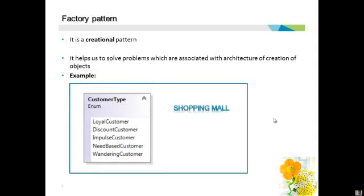When you look at the term factory pattern, it implies that it is going to create or produce something for us. What exactly does the factory pattern create? Objects. It helps us solve problems associated with software architecture with respect to creation of objects. In order to understand the factory pattern and why it is called a creational pattern, it's better if we take an example.